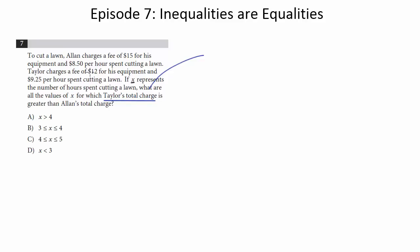So he charges a fee of $12 for his equipment and $9.25 per hour, X being the number of hours. So he's going to charge $12 flat fee and then $9.25 times X because he earns $9.25 per hour and if there's X hours,